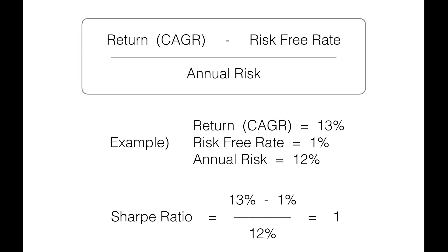Inside that box is a simplified formula. On the top — also called the numerator — we've got the return, oftentimes referred to as the compound annual growth rate. We take that and minus a risk-free rate of return; for that we usually just use the U.S. Treasury rate for the same time period — in this case, for simplicity, we'll say it's 1%. Then we divide that result by the annual risk, which is the standard deviation of the performance. Since it's on the bottom of the equation — the denominator — if this number gets bigger, meaning it's more inconsistent from month to month, it makes the overall Sharpe Ratio smaller.